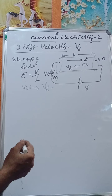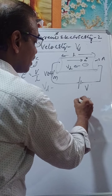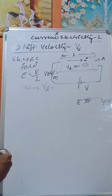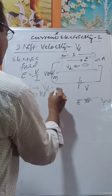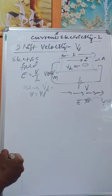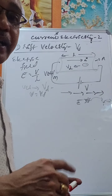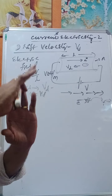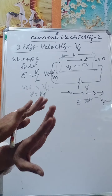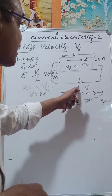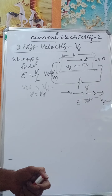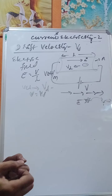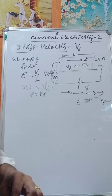Once the external potential is applied, the electrons align in the same direction, attain a resultant velocity, and hence we feel a shock. Before application of the electric field, electrons move in random directions and their resultant velocity is zero — so we feel no shock. After applying the electric potential, electrons acquire a constant steady-state velocity called drift velocity.